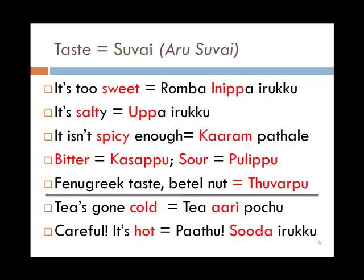Sweetness is inippu. If you want to say it's too sweet, you can say rumba inippa. Salty is uppa — uppu is of course salt. Spicy means karam, so 'it isn't spicy enough' would be karam patala. Bitter is kasappu, sour is pulipa. There's another taste — it's the taste you get from fenugreek or betel nut — and it's called tuvarpa. Not a very commonly encountered taste.